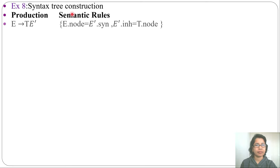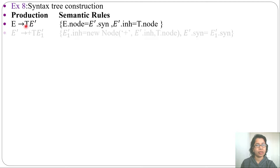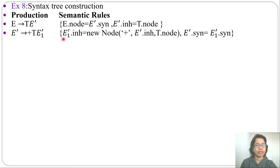Some productions with semantic rules are given. E derives T E', and the E node equals E' synthesized (SYN), meaning this E node is synthesized from the E' node. Then E' inherited from T node — E' is inherited from its left sibling T. Then E' derives plus T E1', where E1 is for children.